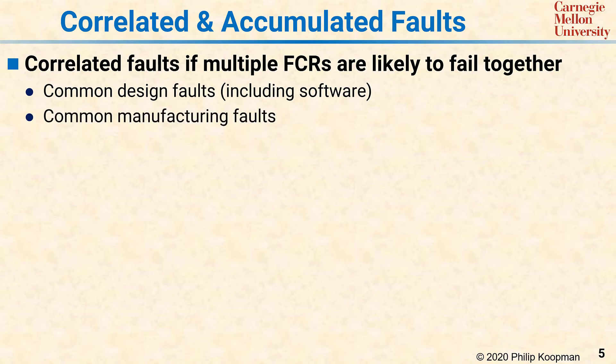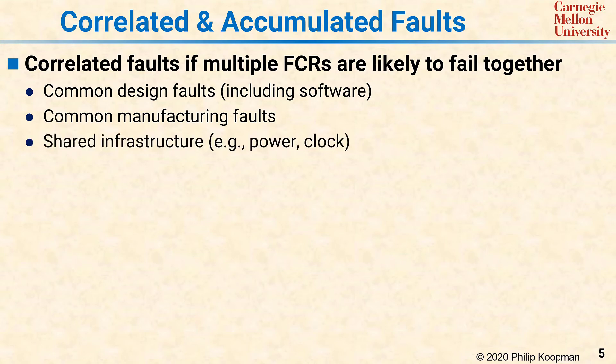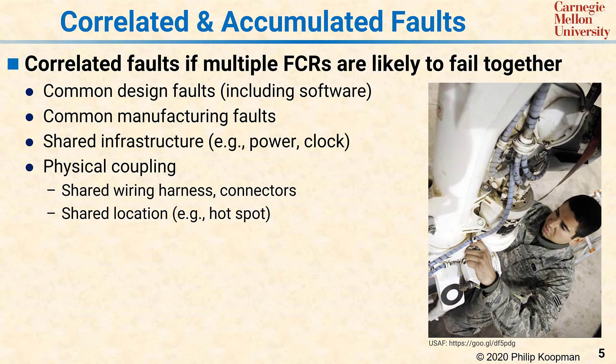You could have common manufacturing faults, such as improperly designed or out-of-spec components. You could have shared infrastructure, such as a shared power supply or a shared clock signal. You can also have physical coupling — for example, two supposedly redundant wires that run through the same wiring harness and are subject to the same failures, such as a loose connector or the two wires shorting together. Or you could have a shared location that gets thermally overloaded. The point with correlated faults is that they really are basically single points of failure, because there's some single event or cause that can cause multiple supposed fault containment regions to fail together.